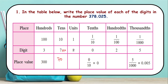In units we have 8, so 8 into 1 is going to be 8. Then we have hundredths, so 2 into 1 upon 100 is going to be 2 upon 100. So how we need to write this: 0.02. So this was our first question.